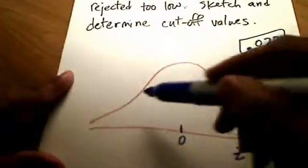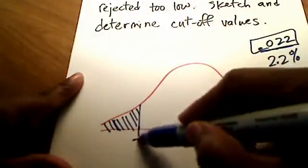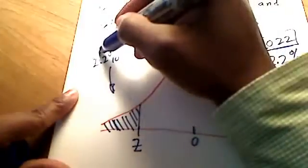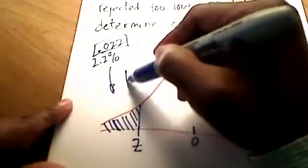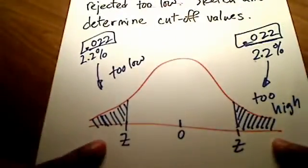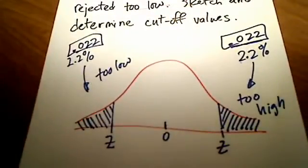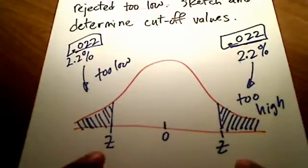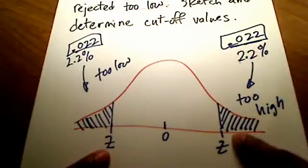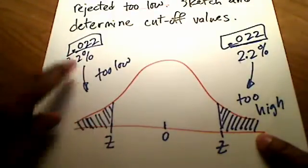Likewise, on the other side, I have another tail — if I shade on this side, this is a z number that corresponds to 2.2%, or 0.022, of thermometers that are too low. So I've got too high on the right-hand side and too low on the left-hand side. We're being asked to find what z numbers make it so that 0.022 is shaded to the right, and what z number gives shading to the left of 0.022.